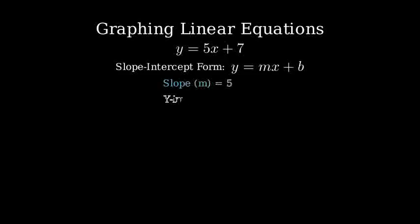From our equation, we can identify that the slope, m, is 5, and the y-intercept, b, is 7.